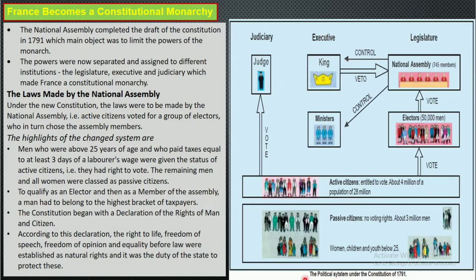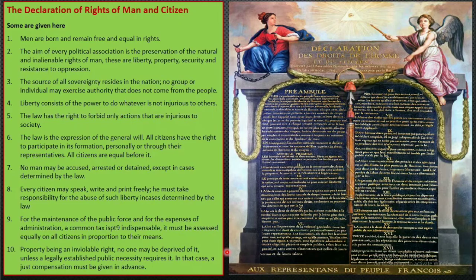Men who paid taxes equal to at least three days of a laborer's wage were given the status of active citizens and had the right to vote. Remaining men and all women were classed as passive citizens. To qualify as an elector or member of the assembly, a man had to belong to the highest tax bracket. The constitution began with the Declaration of the Rights of Man and Citizens.